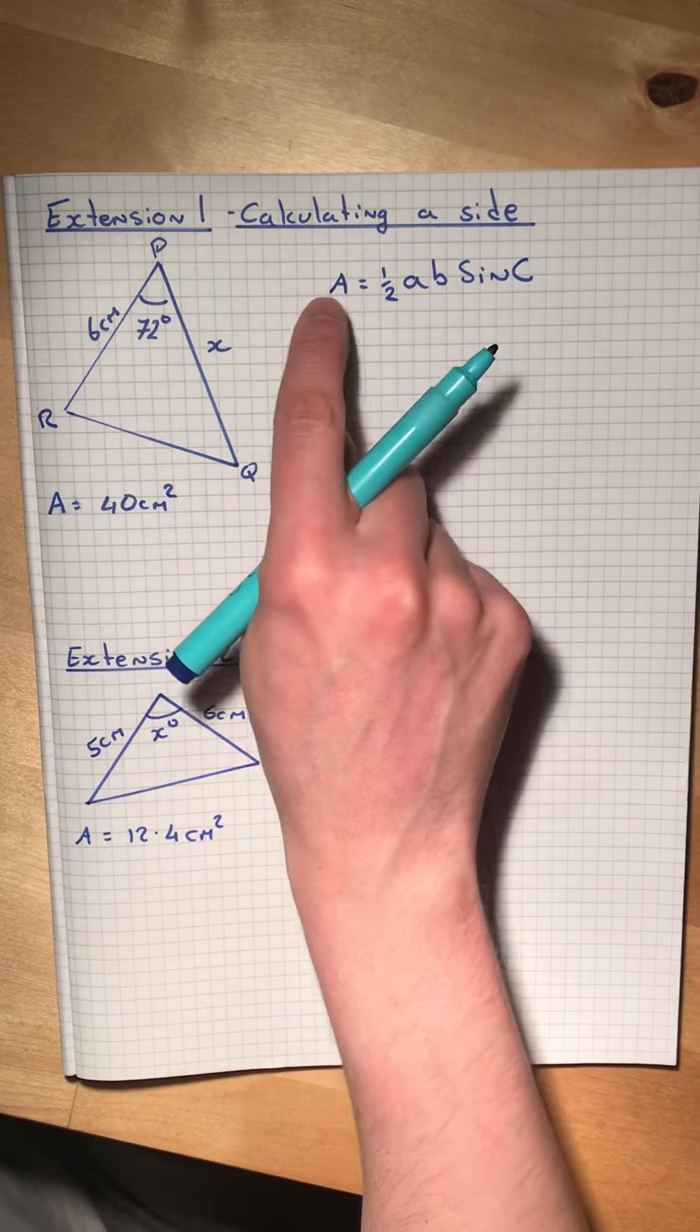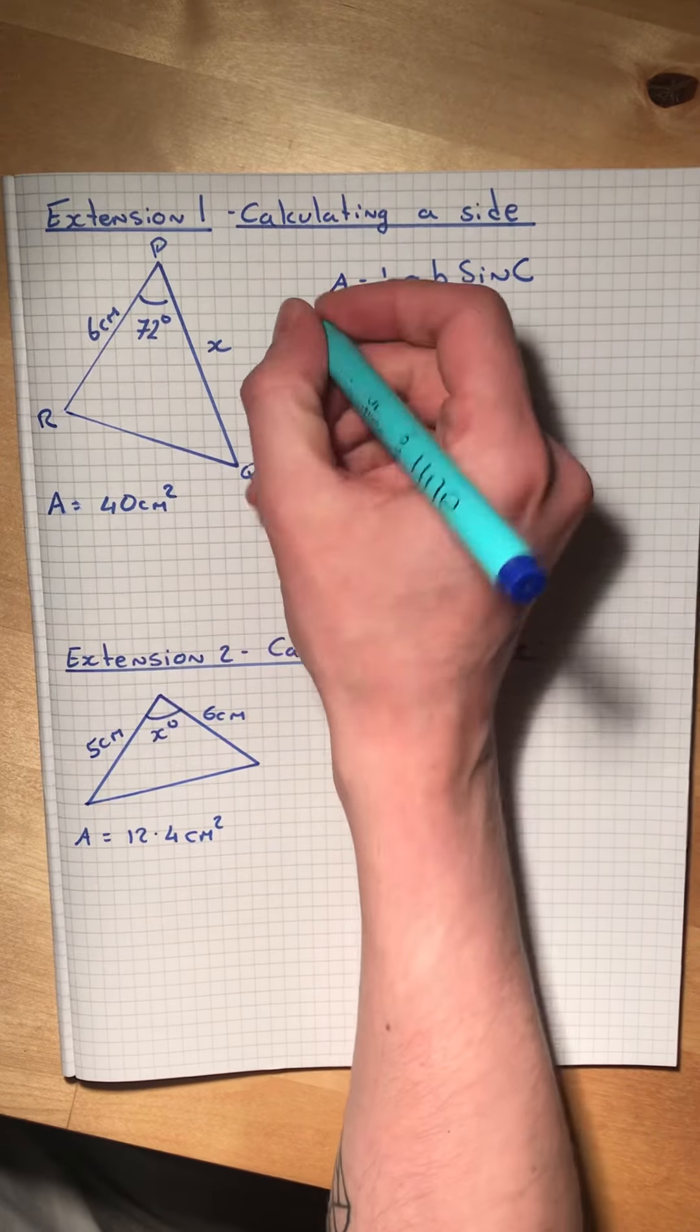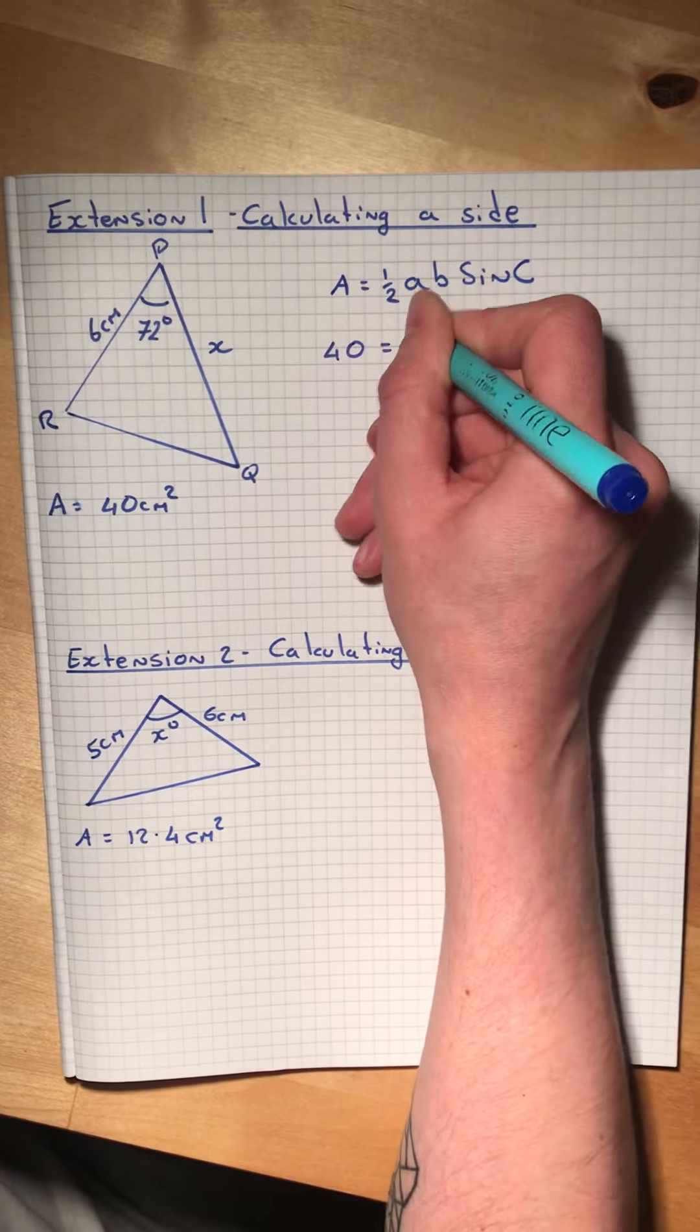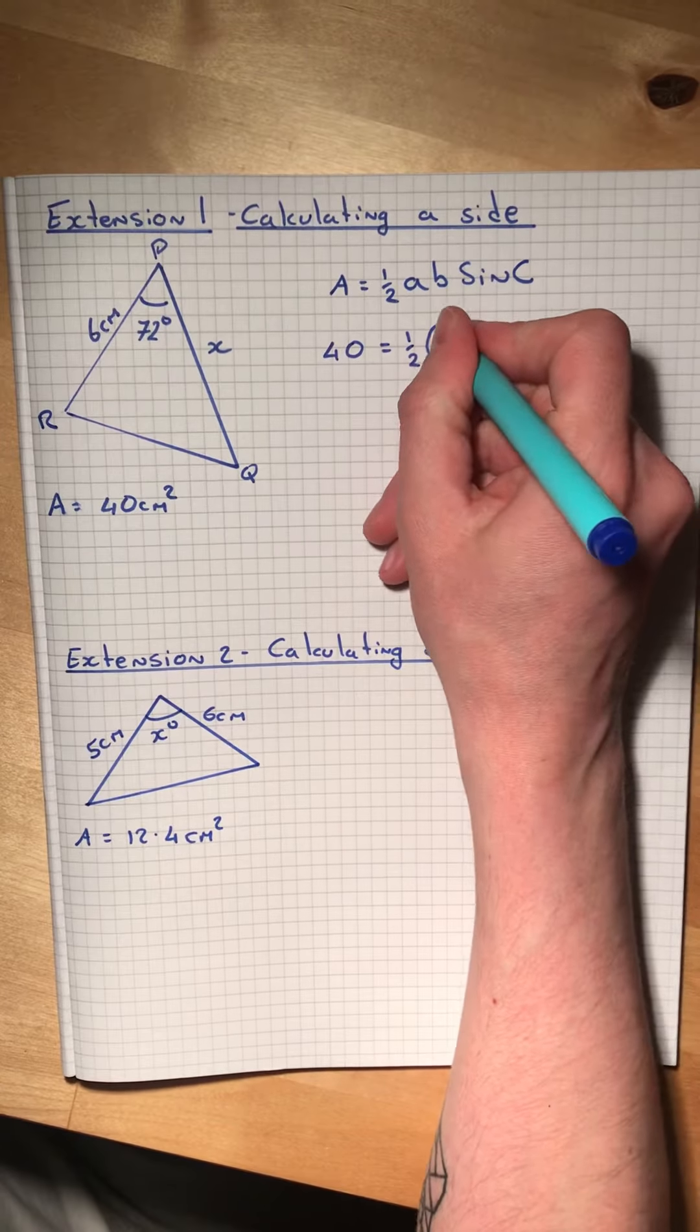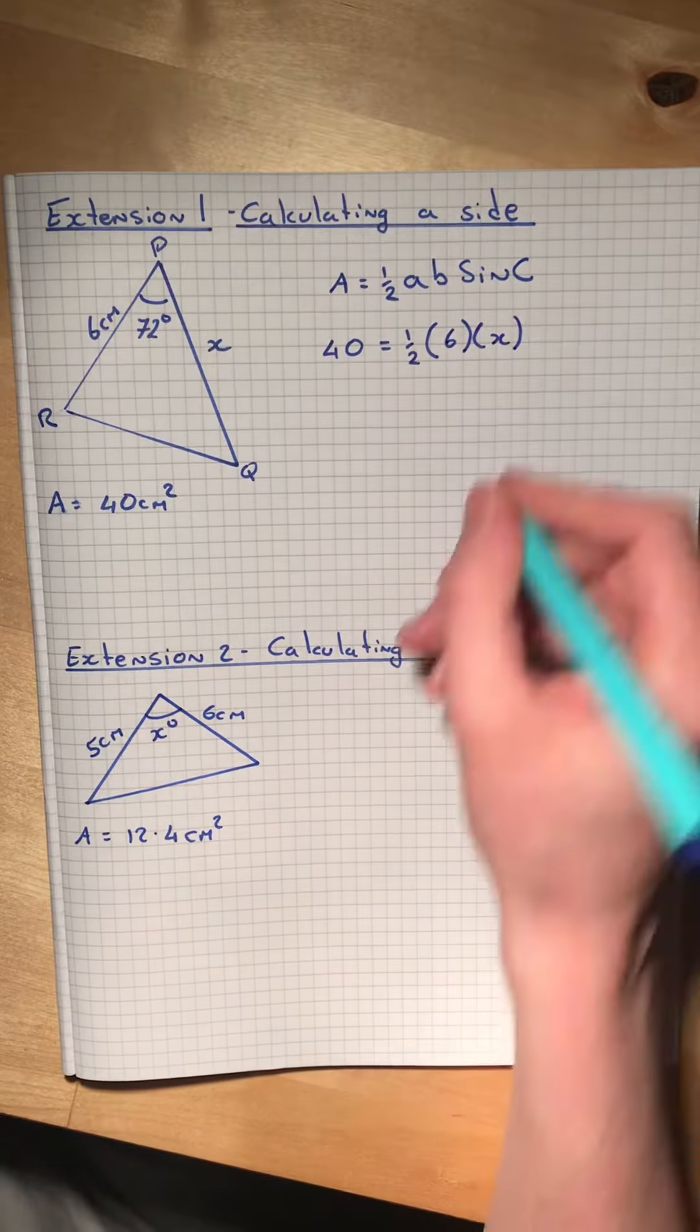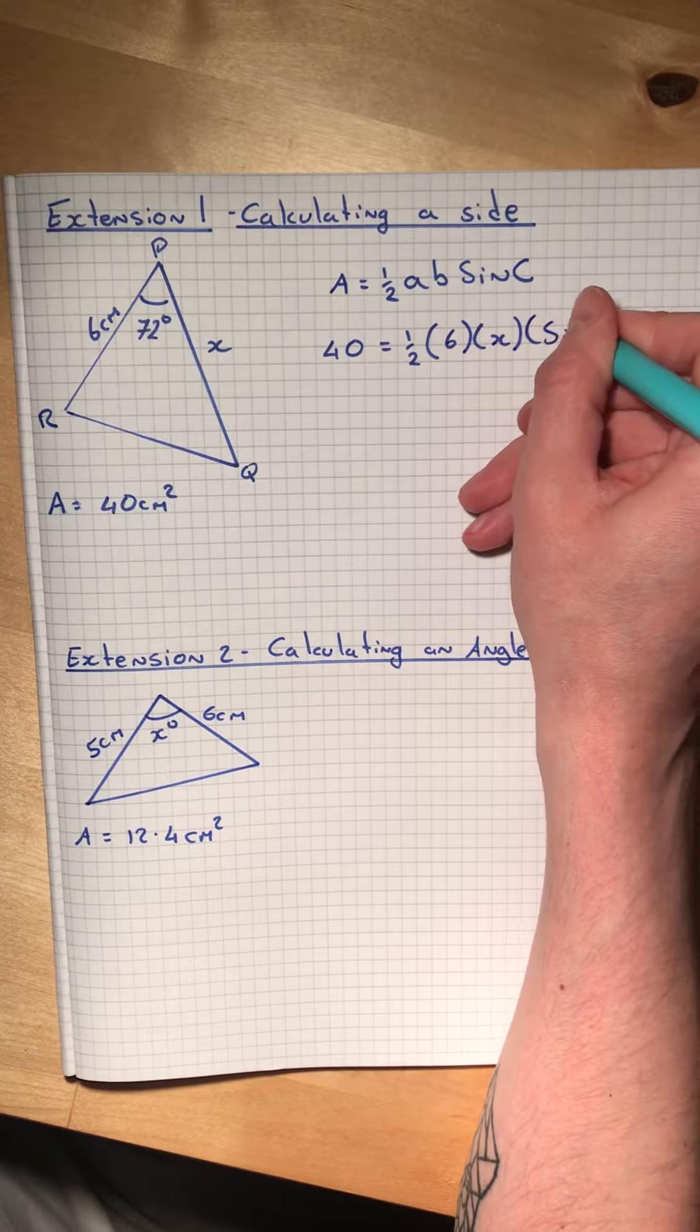So substitute in. This time we know the area, so I'm going to write 40 equals one-half times 6 times the unknown side, let's leave as x, times sine 72.